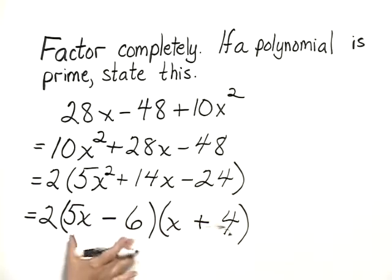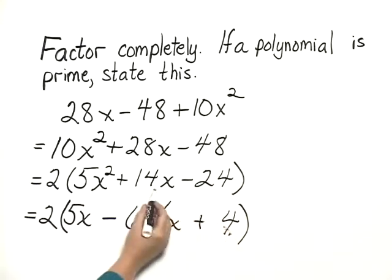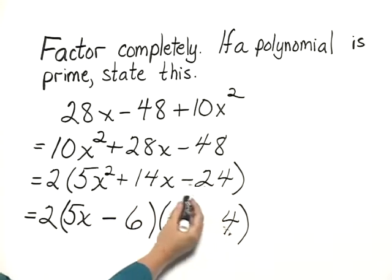We check real quickly. We have 5x squared minus 6x plus 20x which gives us 14x, minus 6 times 4 which gives us minus 24.